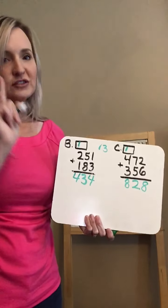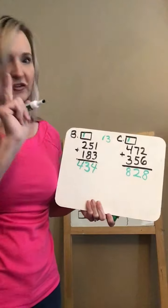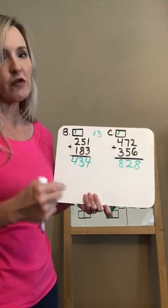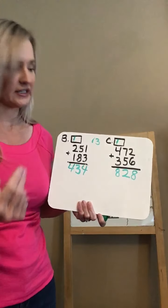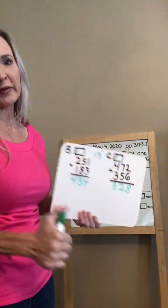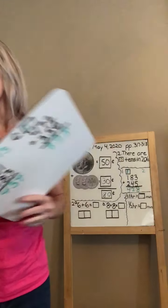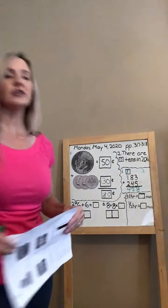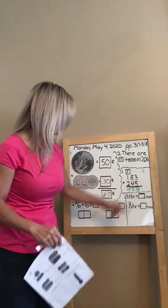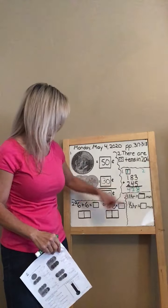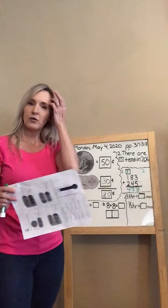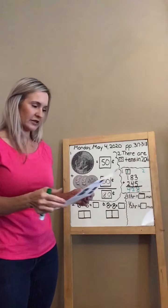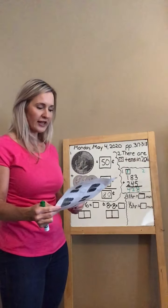If you didn't get it, don't worry — we're going to keep working on this, and it gets easier with practice. I'm going to save the last problem on the worksheet for you to do at home. Remember the steps: start with the ones place, you cannot write two digits in one place, and you must carry. You've got this!